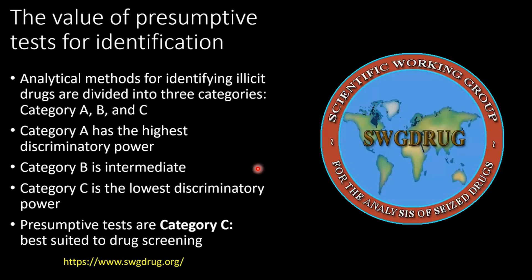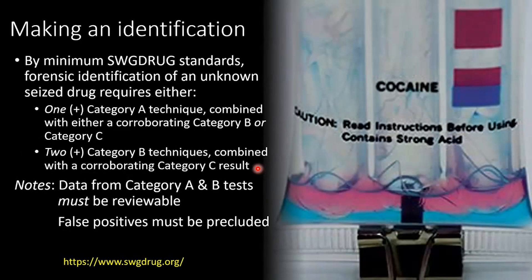There's real value in performing presumptive tests because if you can home in on the correct analytical methods to perform later, you are going to waste less time, fewer reagents, and it's going to be more efficient in the laboratory. In terms of making an identification, presumptive tests are used usually to support a Category A or two Category B techniques. The certainty in the identification comes from more advanced techniques like mass spectrometry, liquid chromatography, and gas chromatography, but the presumptive test still does factor into the identification at the end.